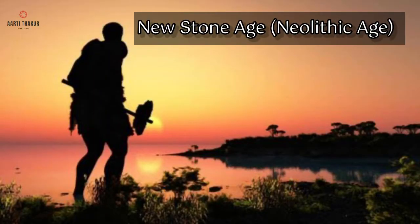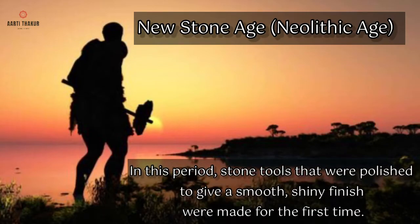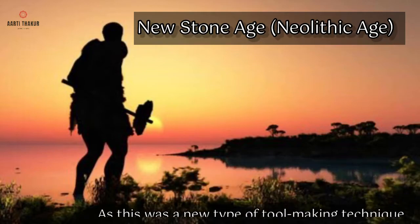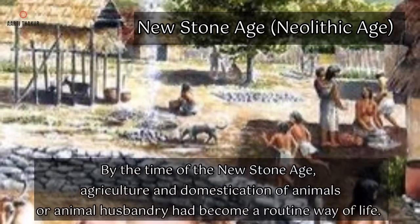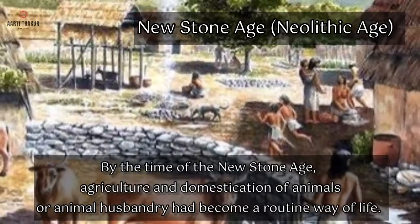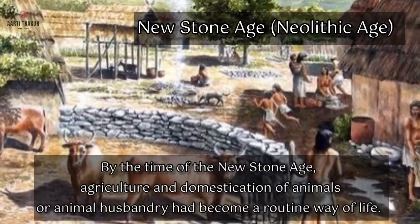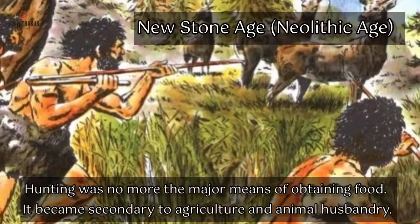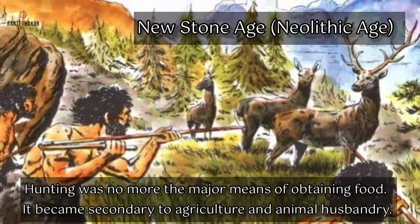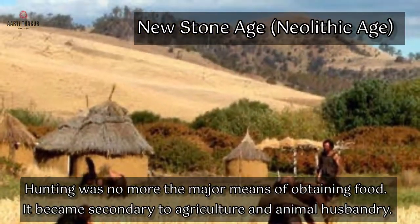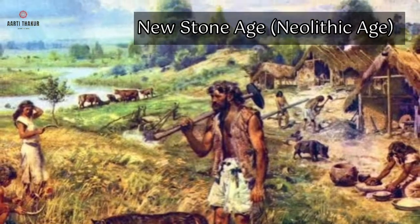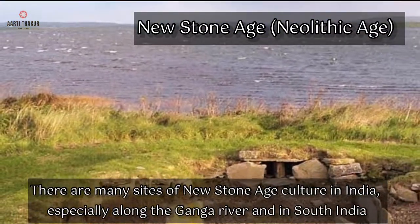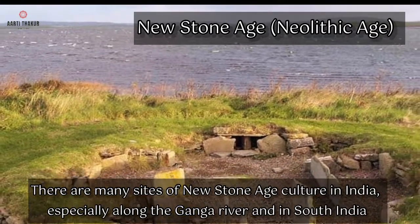New Stone Age — Neolithic Age. In this period, stone tools that were polished to give a smooth, shiny finish were made for the first time. As this was a new type of tool making technique, this period was named the New Stone Age. By the time of the New Stone Age, agriculture and domestication of animals, or animal husbandry, had become a routine way of life. Hunting was no more the major means of obtaining food — it became secondary to agriculture and animal husbandry. There are many sites of New Stone Age culture in India, especially along the Ganga River and in South India.